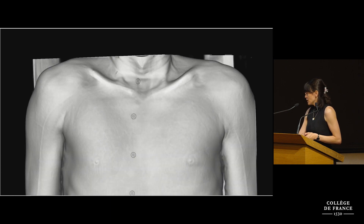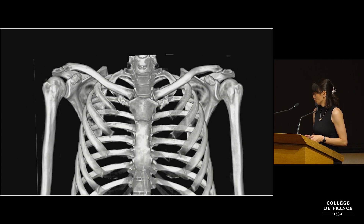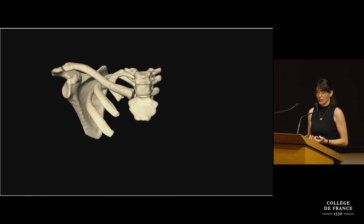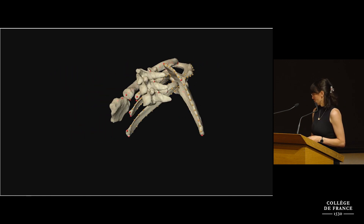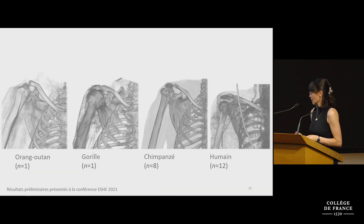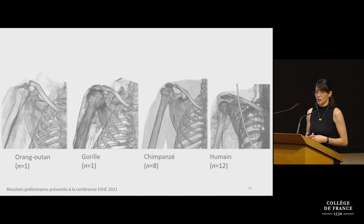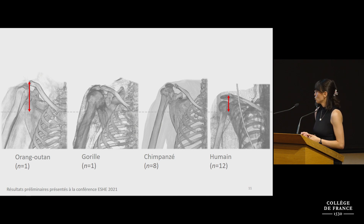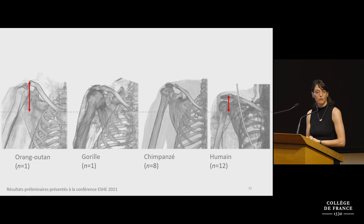The approach I've been taking is to use three-dimensional CT scans, where you can collect detailed landmark data on bone morphology while the bones remain in their articulated positions. I've presented some preliminary results using this approach to compare shoulder structure in apes and humans. The transition from an elevated ape-like shoulder to the low shoulder of humans is thought to be one of the major anatomical transitions in human evolution.